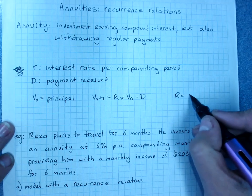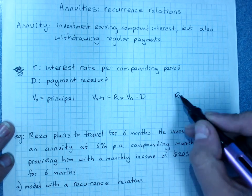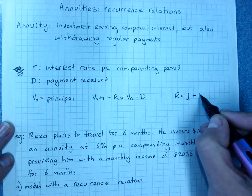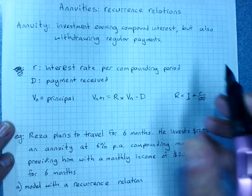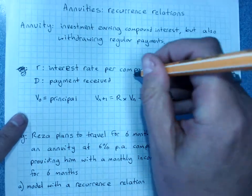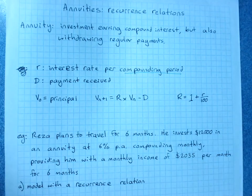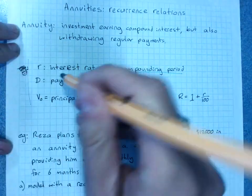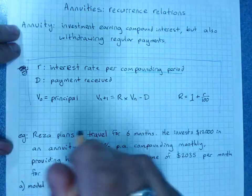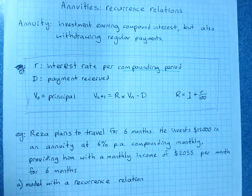And R of course is our growth factor or reduction factor. In this case it's a growth factor. So 1 plus the interest rate on 100. Now do remember, unlike using the TVM solver, we do have to make it the interest rate per compounding period, not just the annual interest rate. And this is our big important box for annuities with recurrence relationships.